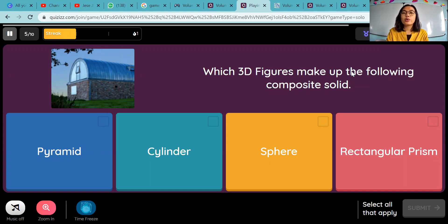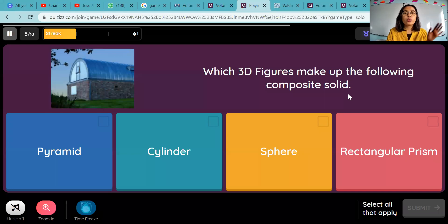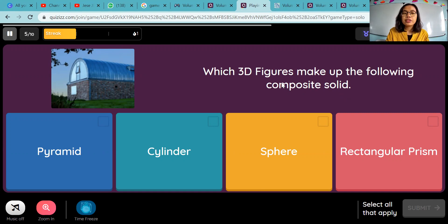So before that, I want to remind you again by doing these games. We can see this is a picture. This is one of composite solids. And then the question is, which 3D figures make up the following composite solid? We know that composite solids are made up of two or more solids. So we can divide this composite solid.